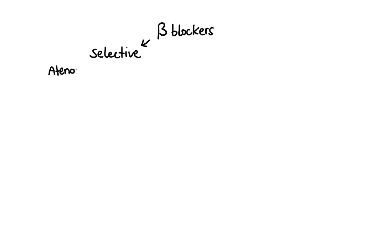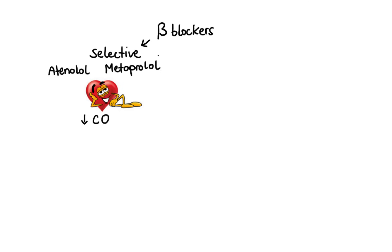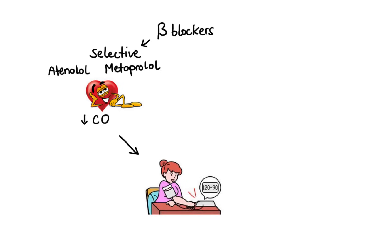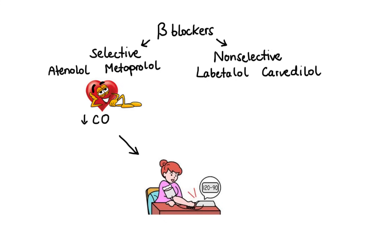Next we have selective beta blockers such as atenolol and metoprolol, which selectively block beta-1 receptors on the heart, thus causing decrease in cardiac output and thereby decrease in blood pressure. We also have non-selective beta blockers such as labetalol and carvedilol that can additionally block alpha-1 receptors and thus simultaneously decrease vascular resistance.